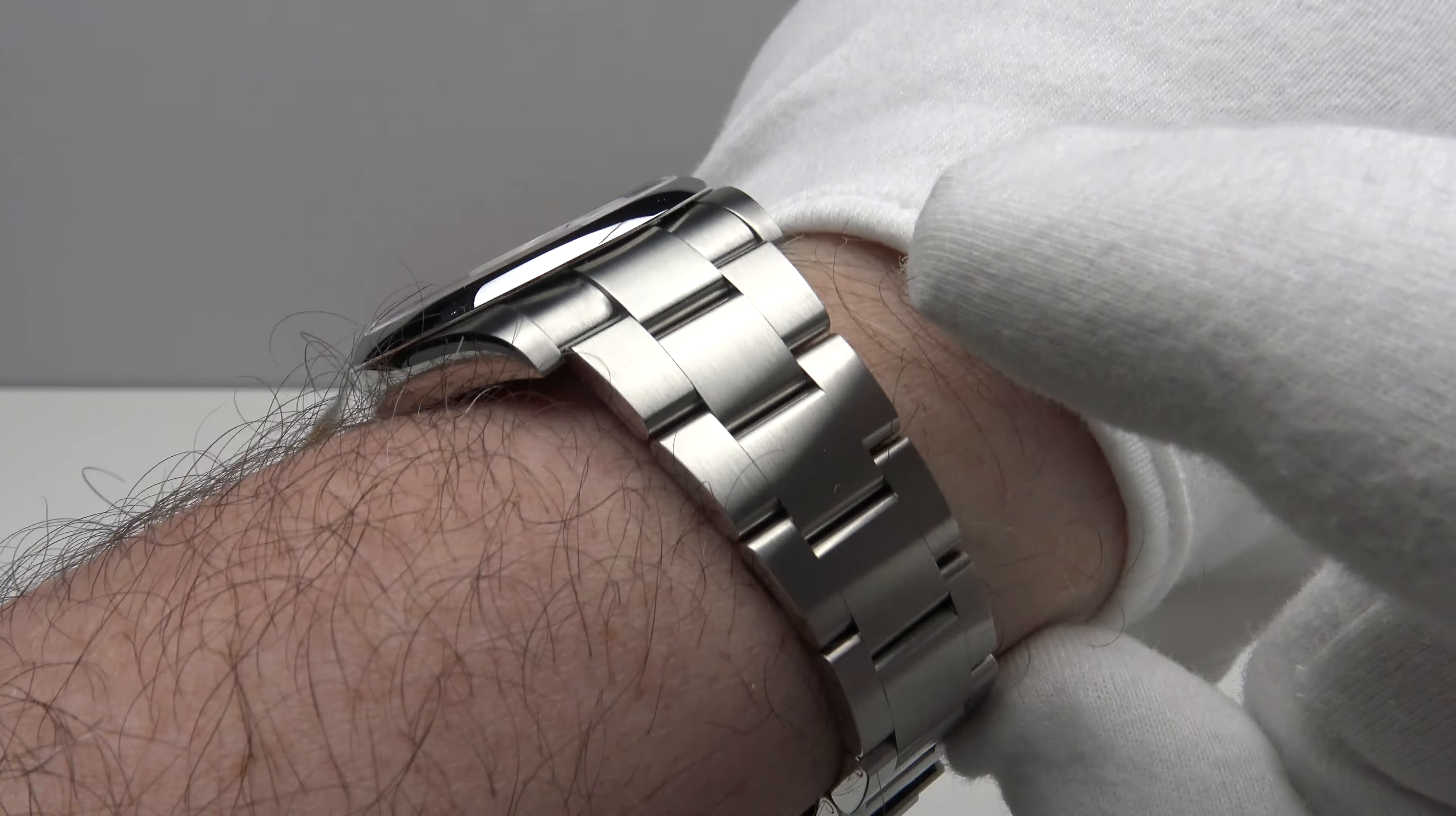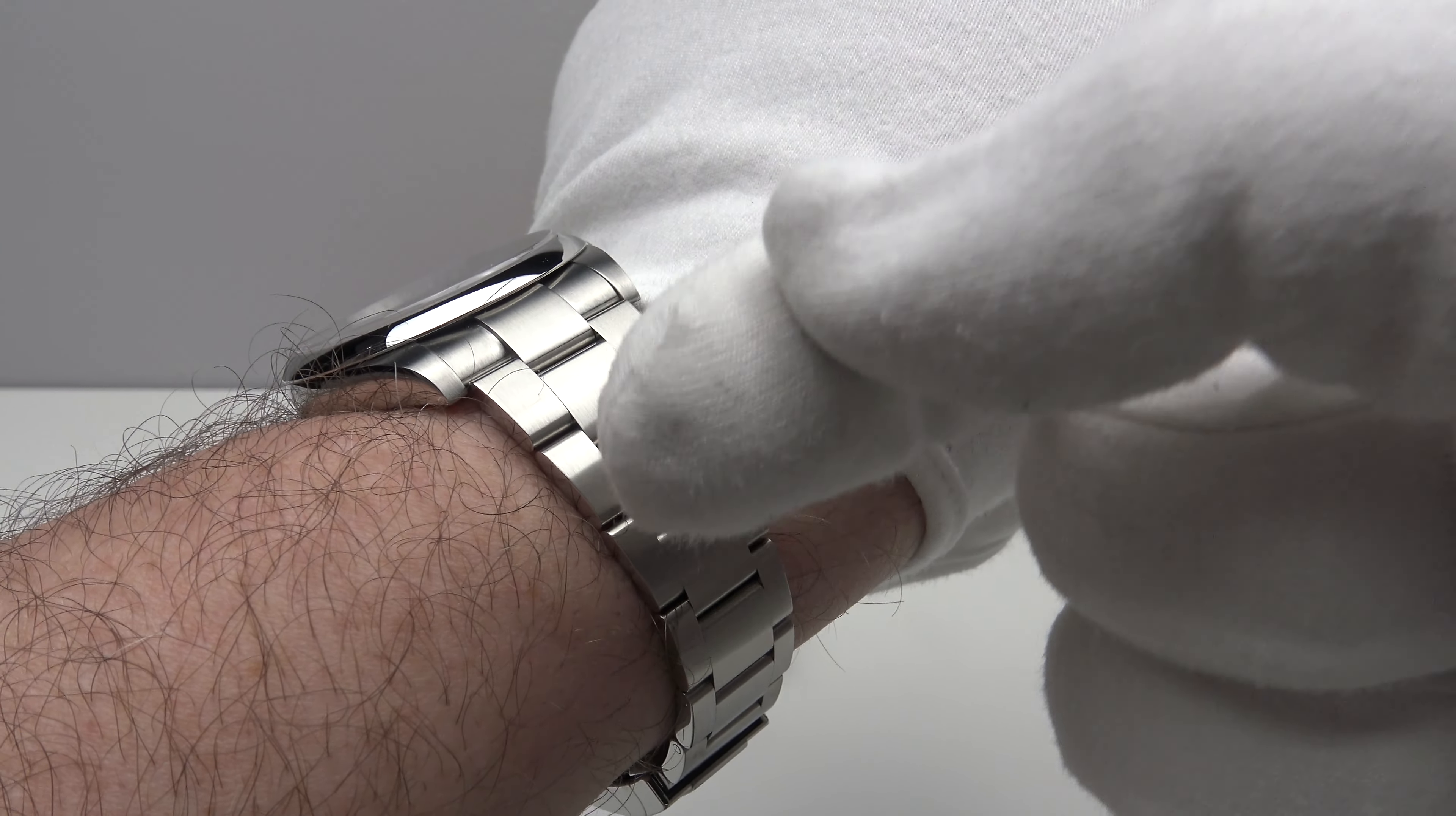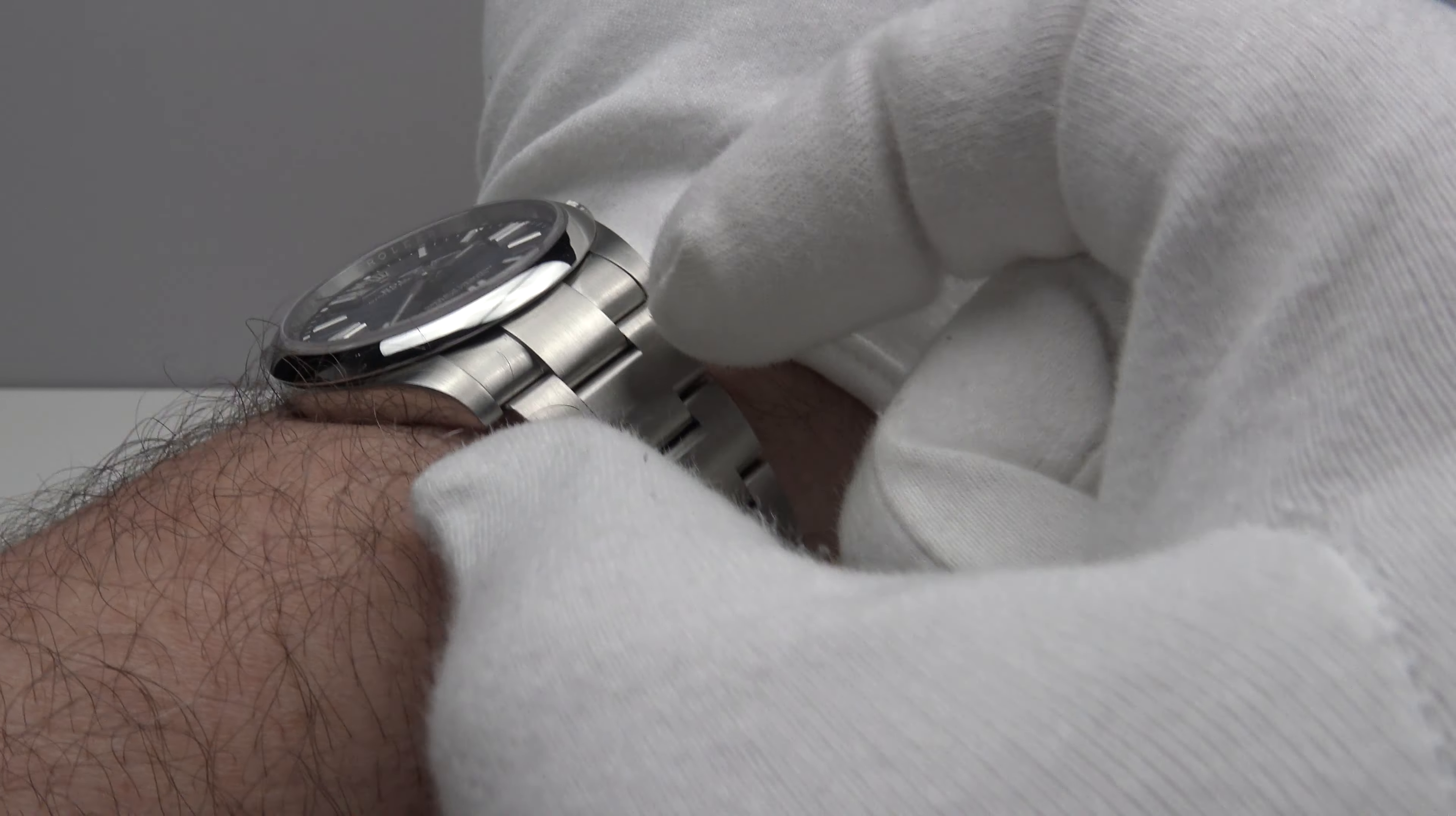The reason why it's incorrect is by sizing the bracelet too tight without that index finger of expansion, it puts the pins, the screw pins of the bracelet into shear. And it puts the bracelet pins into shear on both sides of the center link. And what that does is it expedites the wear of the bracelet.